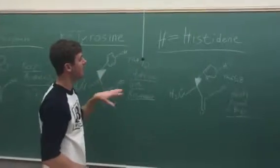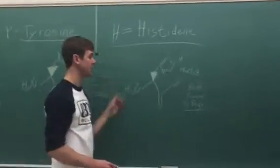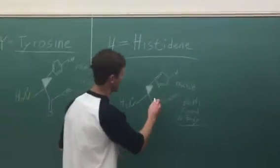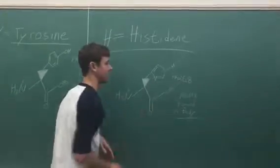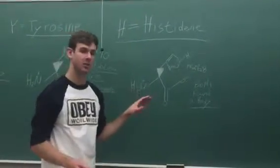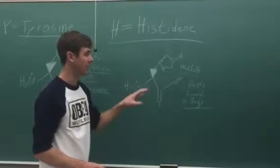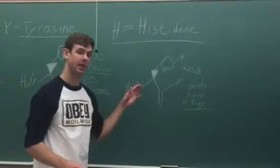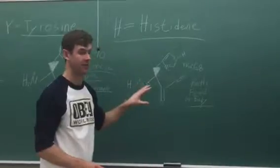Next is histidine, H. Histidine, the nitrogen right here, is going to be 6.8. The important thing to remember, though, is that under physiological conditions, or in your body, you're going to find an equal amount of protonated and deprotonated forms of histidine.